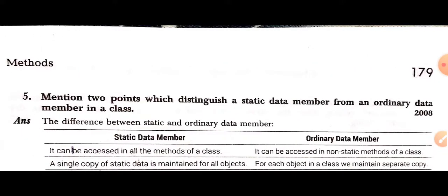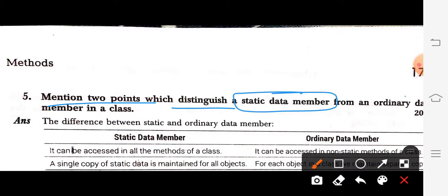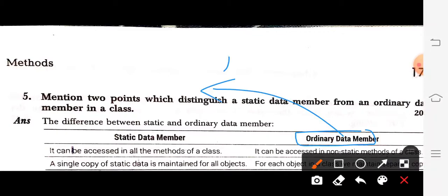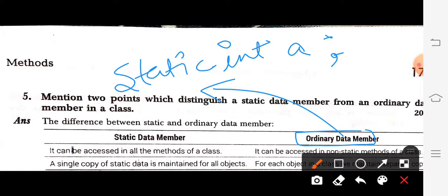The last question for today: mention any two points that distinguish a static data member from an ordinary data member in a class — that is, the difference between a static variable and an instance variable. For static data members, they can be accessed in all methods of the class — directly in both static and non-static methods. For ordinary data members, they can only be accessed in non-static methods of a class.